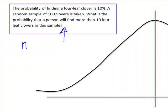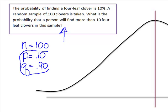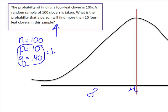The parameters that we have are n, p, and q. Remember that n is our sample size of 100. p is the probability of success, which is 0.10. q is the probability of failure, which is 0.90 — because p plus q always have to equal 1. The parameters of the normal distribution are mu, which is the mean, and of course the standard deviation. So I'm going to use n, p, and q, apply the formula for the mean and standard deviation of a binomial distribution, and then proceed.